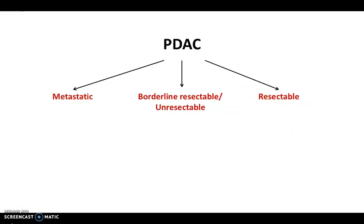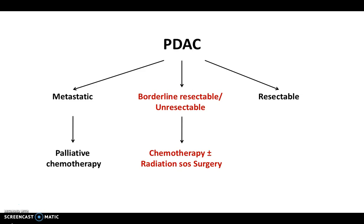This is very important because it helps guide patient management. Patients with metastatic disease are given palliative chemotherapy. Patients with borderline resectable or unresectable tumors are given neoadjuvant chemotherapy with or without radiation, and on the post-treatment scan, depending on the response, the patients may or may not undergo surgery — done with the hope of downstaging the tumor.